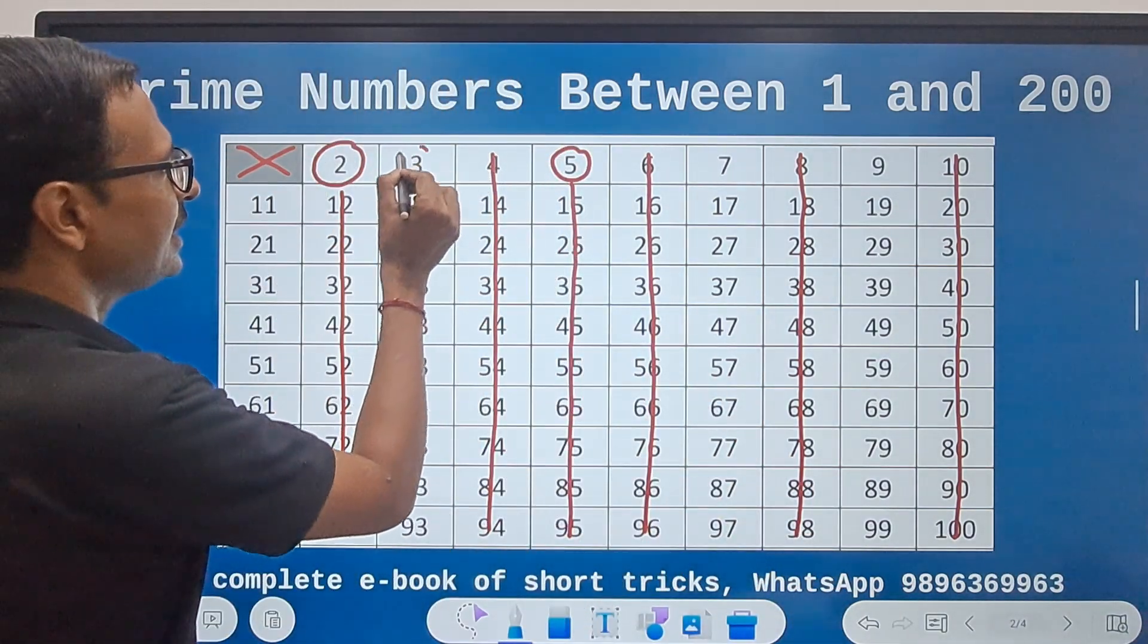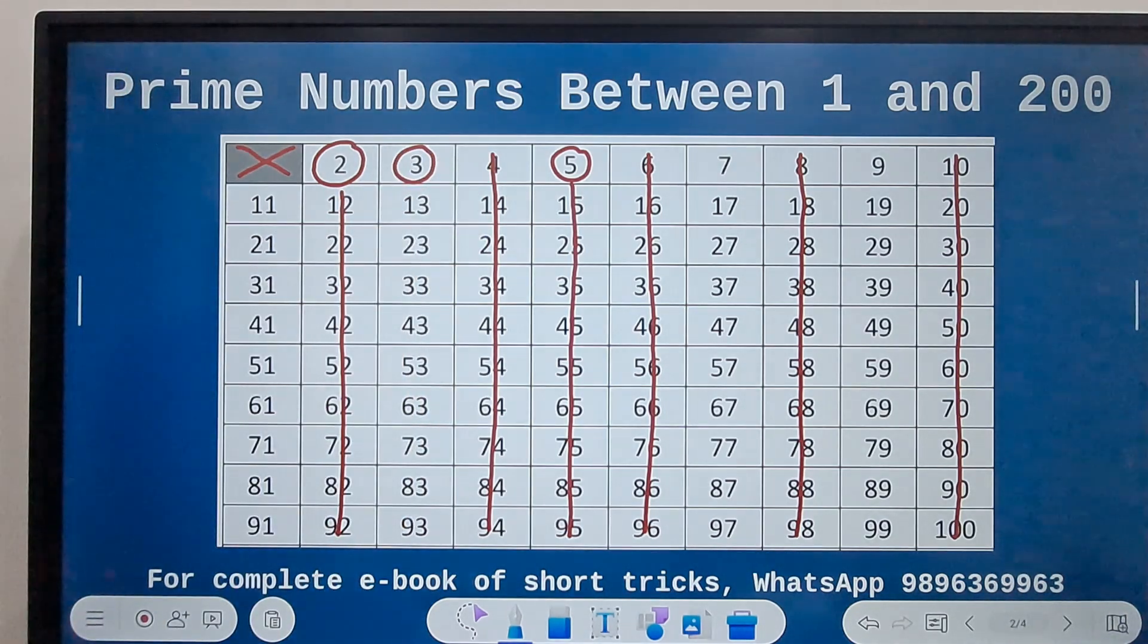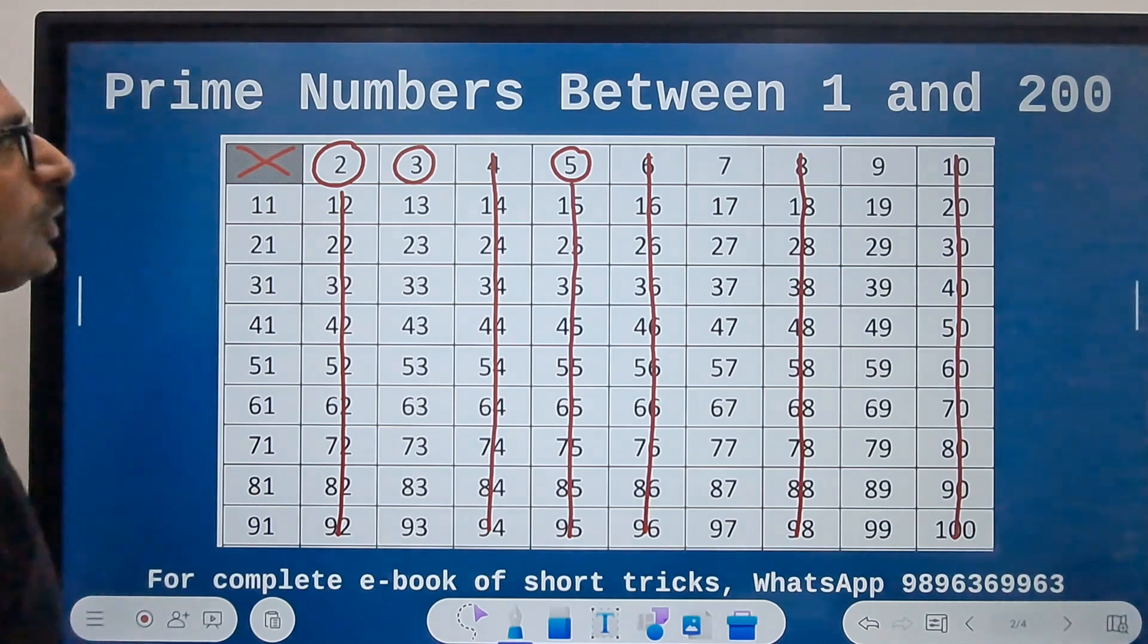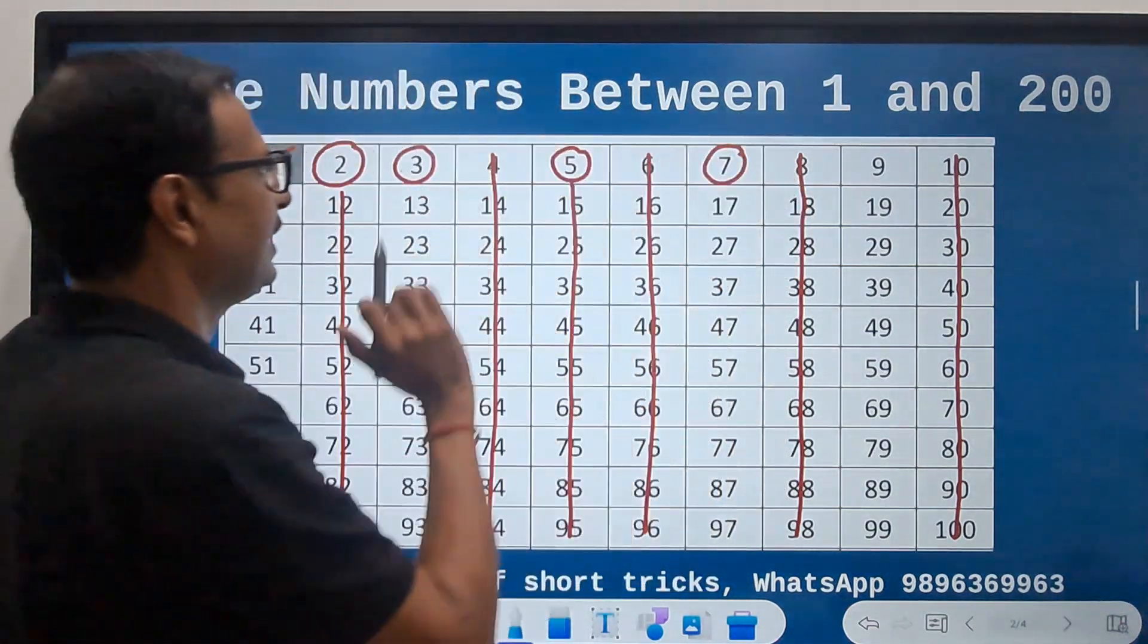Now what do I do after this? The number 3 is a prime number, and I need to rule out the numbers which are multiples of 3, and then rule out the numbers which are multiples of 7. Let's do that now.